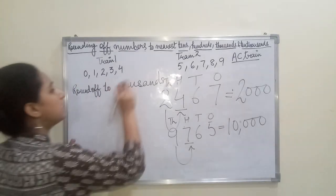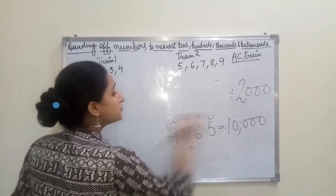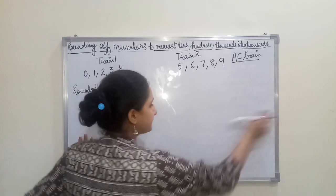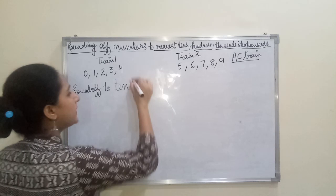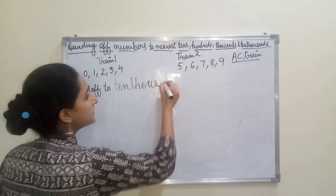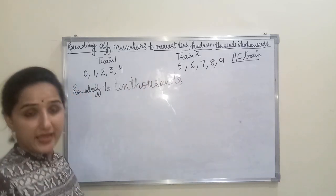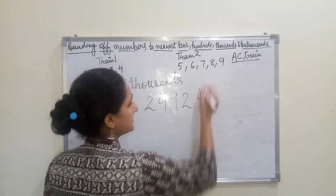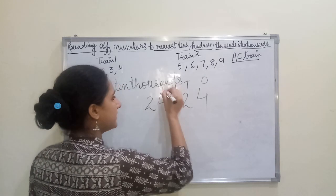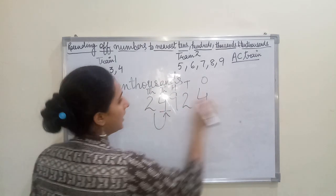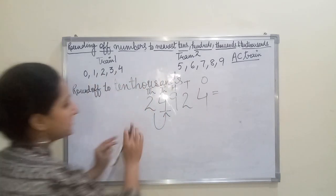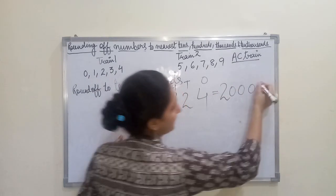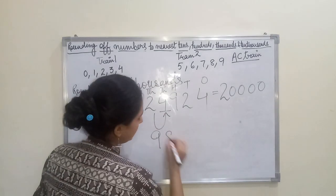If you are able to do rounding off to thousands, you can do it for ten thousands, hundreds, lakhs, ten lakhs, crores — anything. This is the very basic concept that starts with rounding off and then moves into estimations. Let's take an example for ten thousands: write down ones, tens, hundreds, thousands, ten thousands. Mark the previous digit — four. It belongs to Train One, a non-AC train, so there is no change. Two remains two and all the remaining digits become zero.